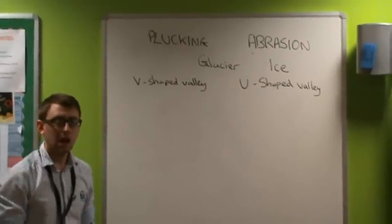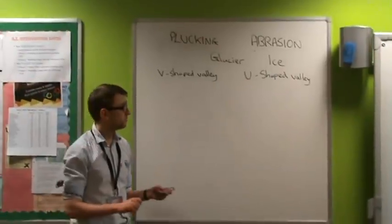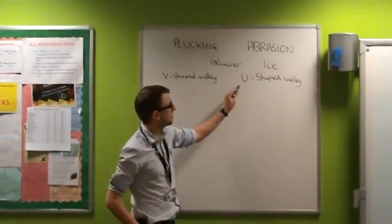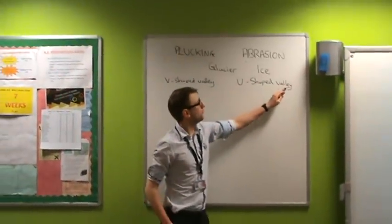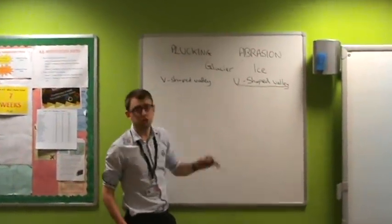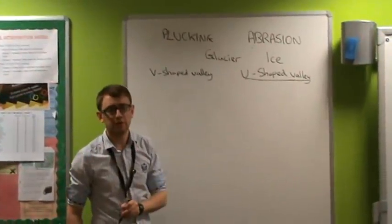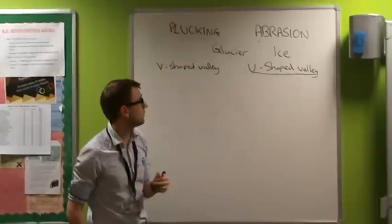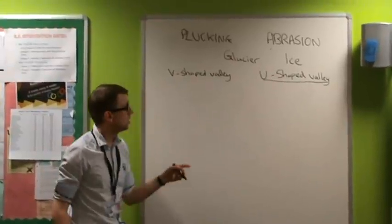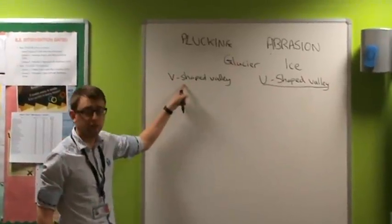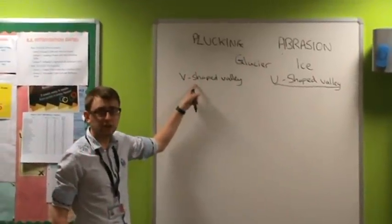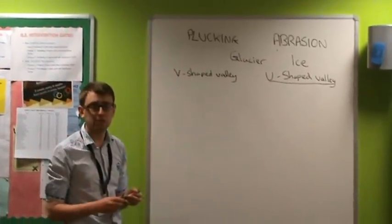Our extreme environment is mountains, and the landform we're looking at is a U-shaped valley. A U-shaped valley starts off as a V-shaped valley in our mountainous areas.